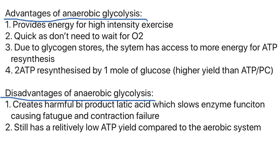There are always disadvantages however. One is that it creates the harmful byproduct lactic acid. Why is it bad? It slows enzyme function, causing fatigue and ultimately muscular contraction failure. Additionally, it still has a relatively low ATP yield compared to the aerobic system, which — as we'll see later — has a yield of 38 ATP per mole of glucose.